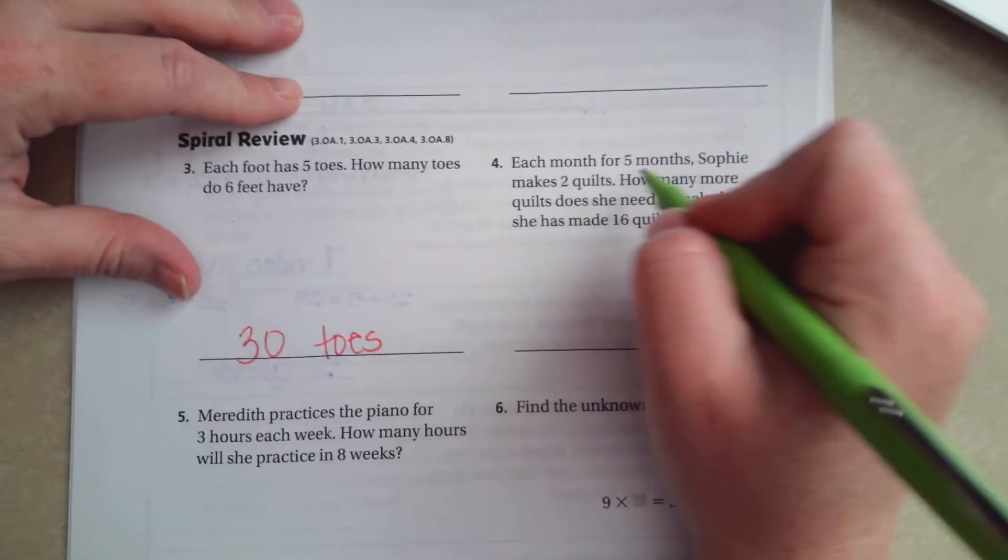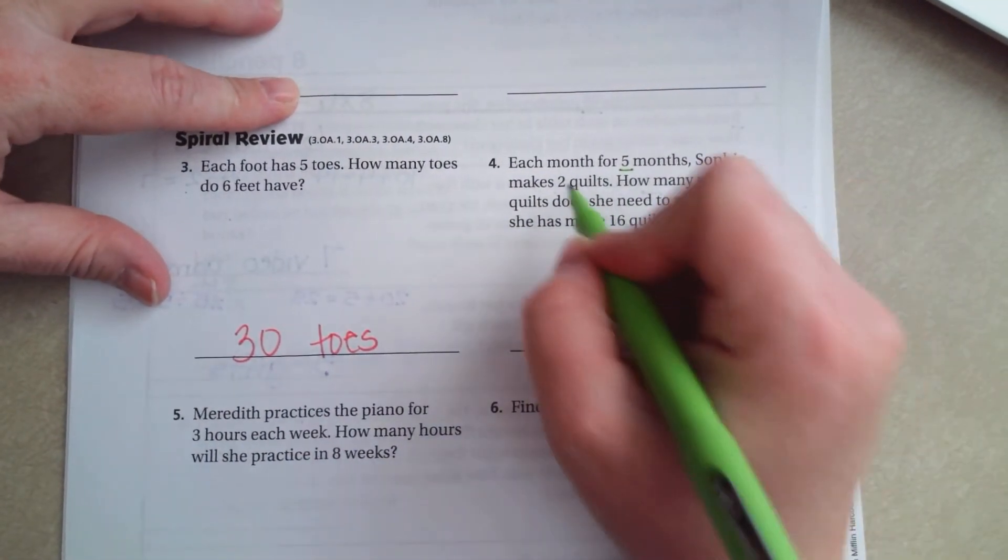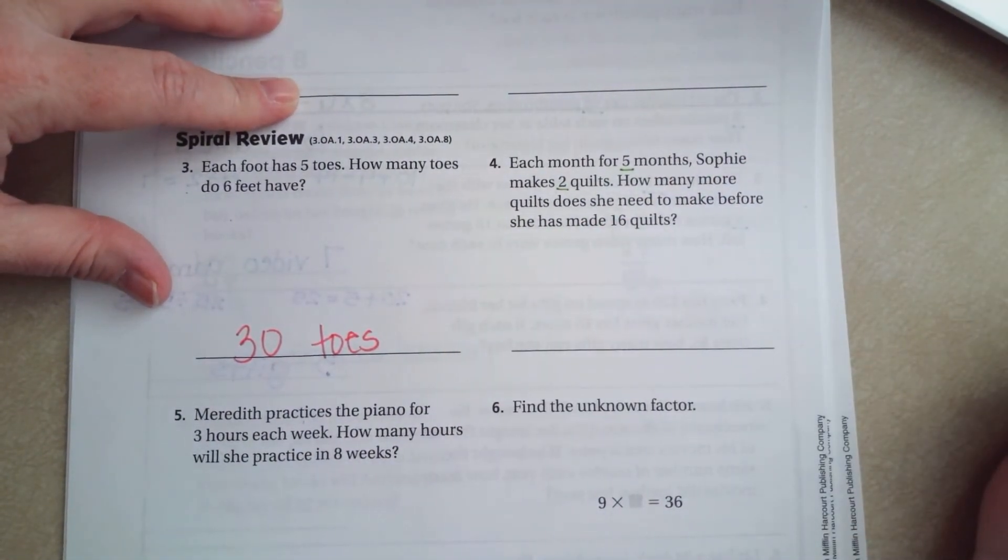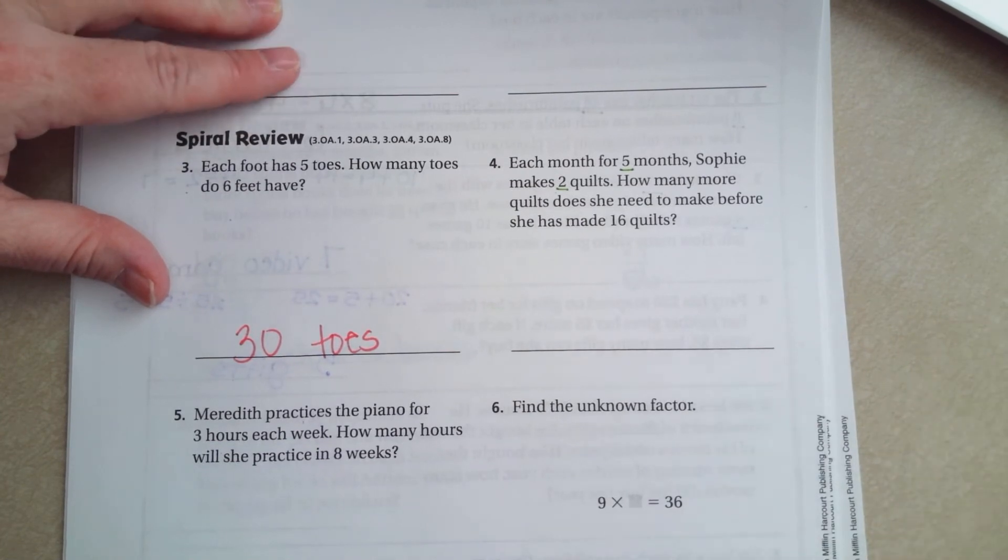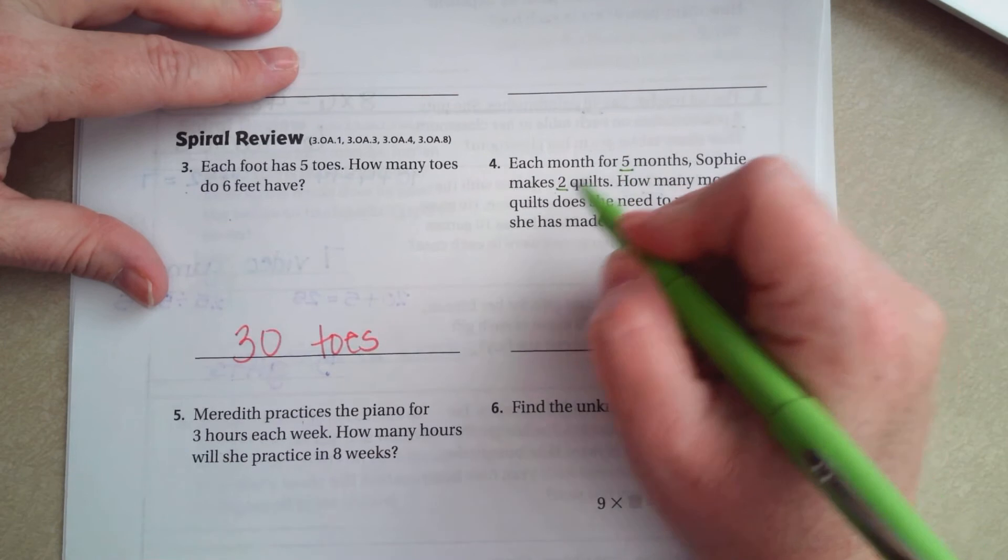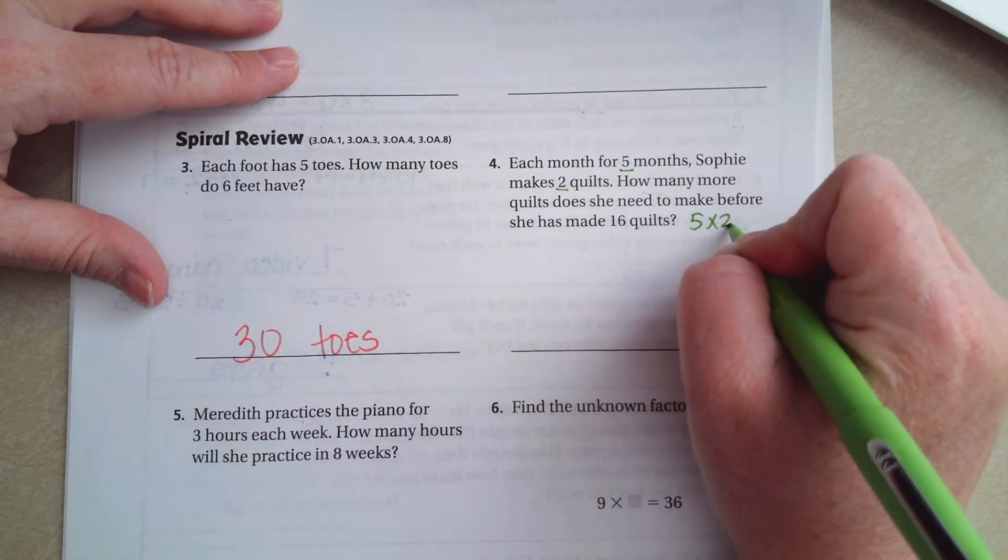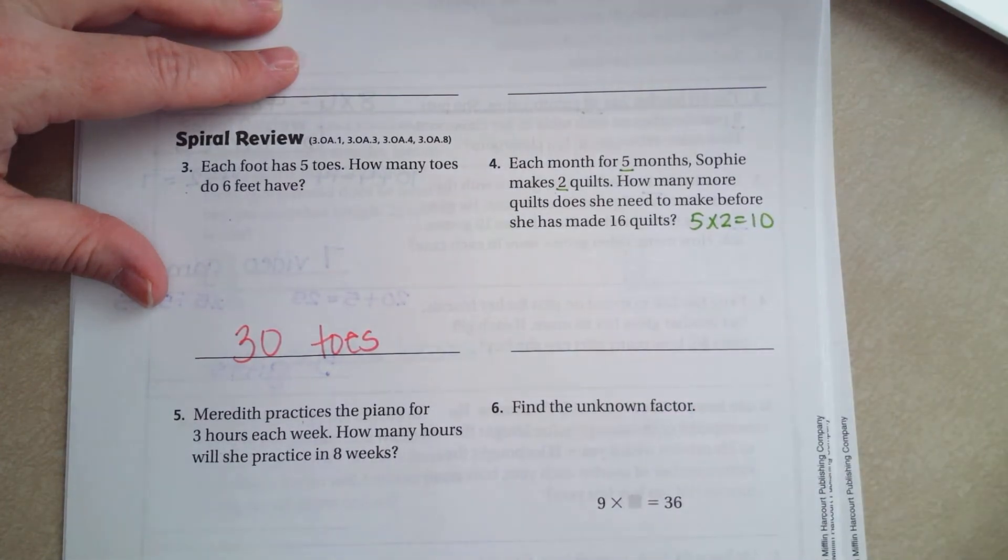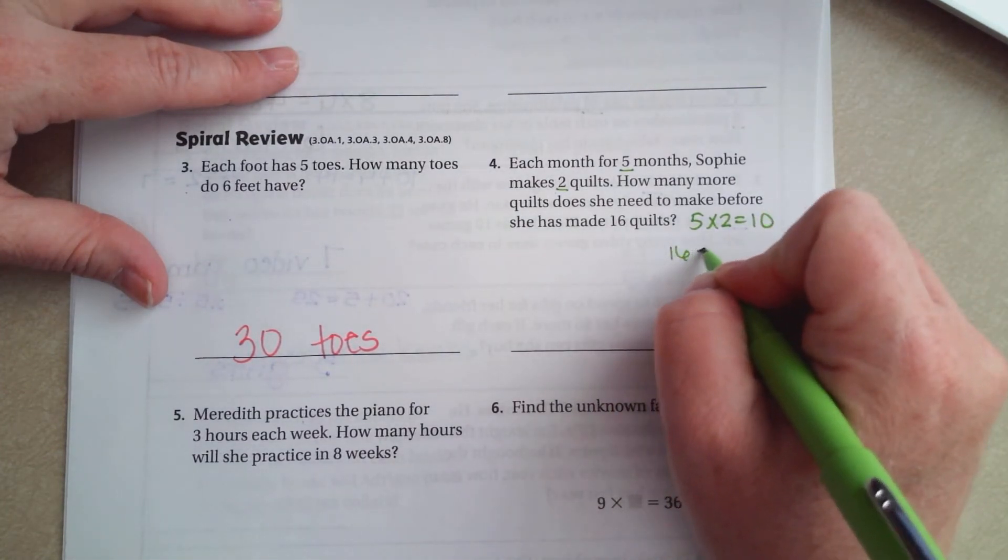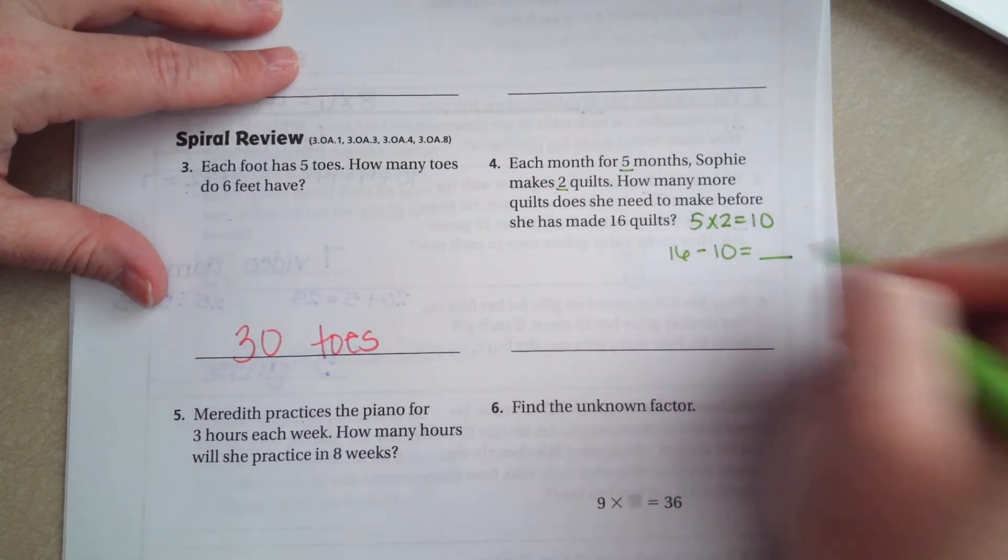Each month for five months, Sophie makes two quilts. How many more quilts does she need to make before she has 16 quilts? So first we know how many she has. Well, she has 5 times 2, which is 10, right? Now we have to do 16 minus 10 to find out how many she still has to make before she has 16. Well, 16 minus 10, that's six quilts.